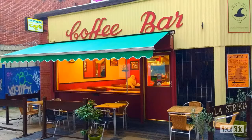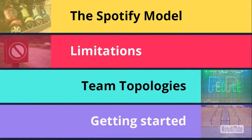So there are four things we'll look at this evening: the Spotify model and what that means, some limitations of that model, a very quick overview of some aspects of what we've been writing about in the Team Topologies book, and then a few ideas on getting started with some of these techniques.